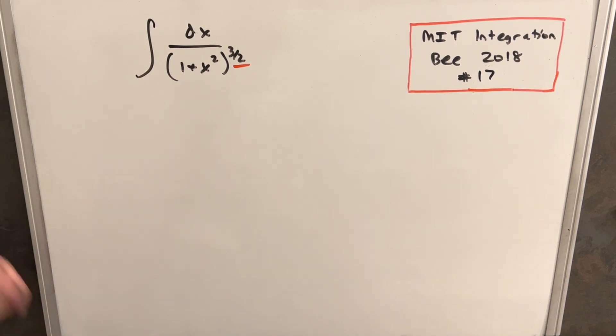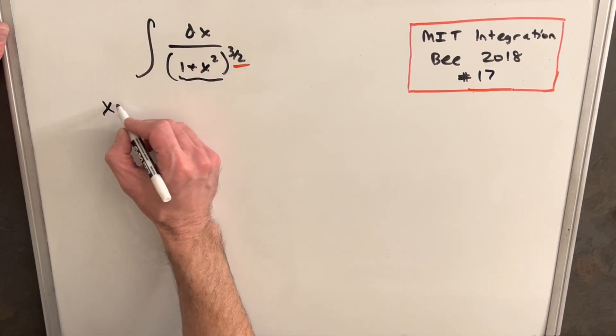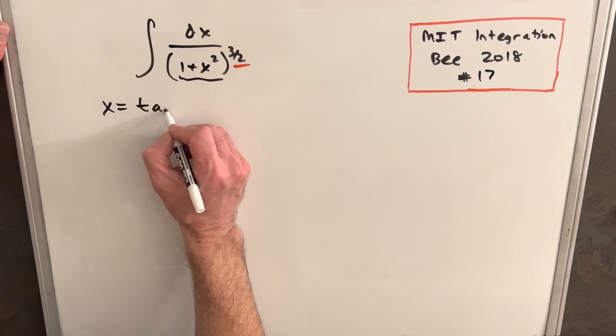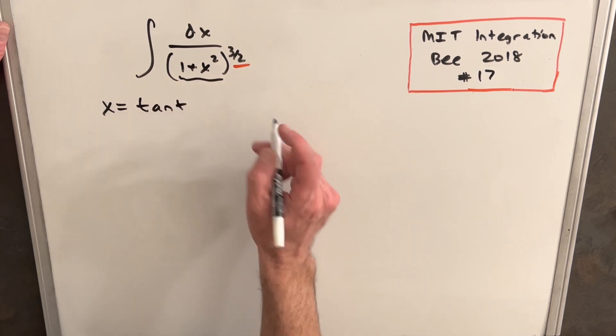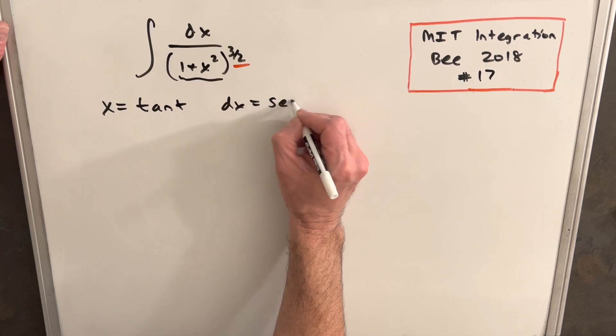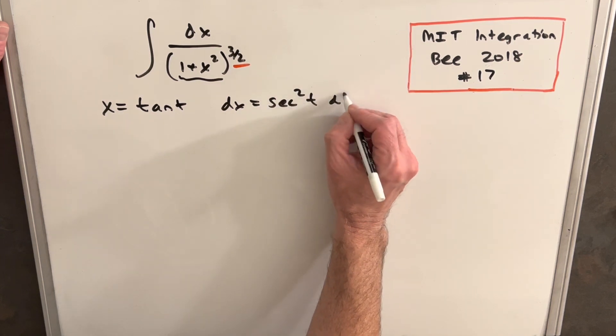It should work out pretty nice. So we notice we have this one plus x squared situation when we want to make our trig substitution using tangent. So I'm going to say x is tan of t. I'll differentiate both sides and our dx is going to be secant squared t dt.